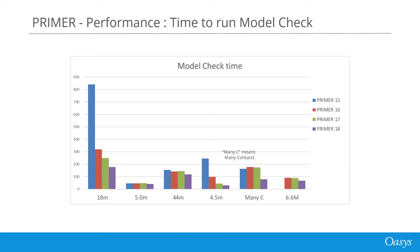Another very commonly used feature in Primer is model checking. The time taken to check a model is very dependent on both the LS-Dyna features used and the size of the model. This graph shows the time taken to check six different models in different versions of our software, from version 15 through to the latest version 18. In all six models you can see that further improvements have been made between version 17 and 18. In particular, in version 18 we identified a bottleneck in the checking of contact definitions and this has been considerably speeded up. As you can see for the model labeled 'many C', which contains a lot of contact definitions, the checking time has more than halved since version 17.